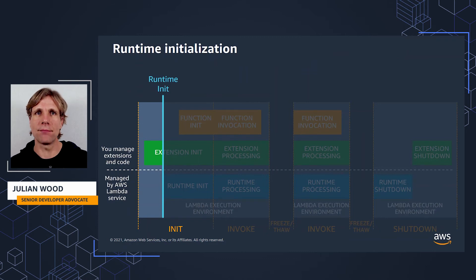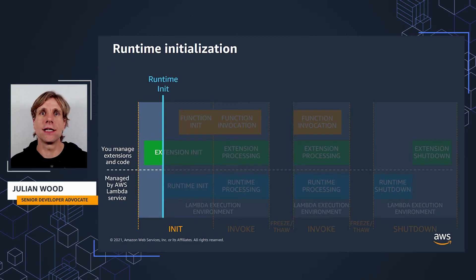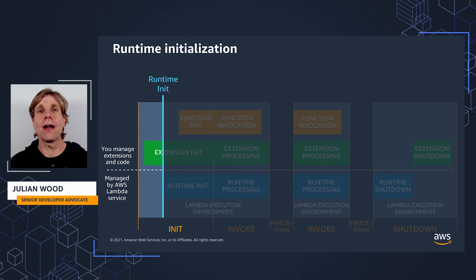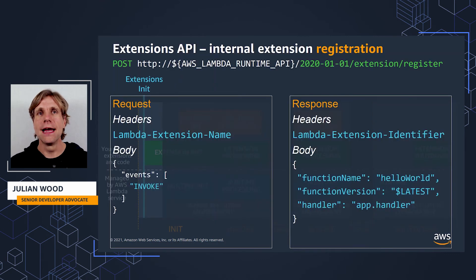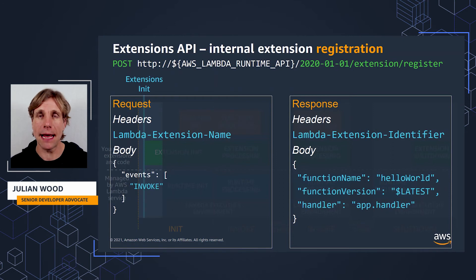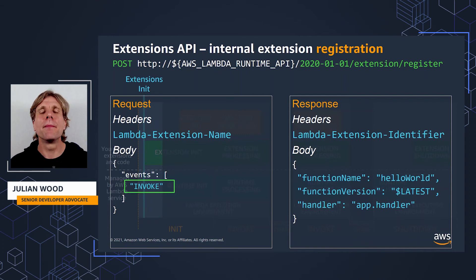Lambda launches the runtime process. If you've configured any internal extensions with language-specific environment variables — remember, these are set via JAVA_TOOL_OPTIONS, NODE_OPTIONS, or .NET startup hooks — Lambda starts the runtime with the extra parameters. For wrapper scripts, Lambda runs the script you've included, which then manages the startup of the runtime. An internal extension can also register with the Extensions API using the same API path. It can register to receive invoke events as part of the runtime, but not shutdown events, as that's external to the runtime.